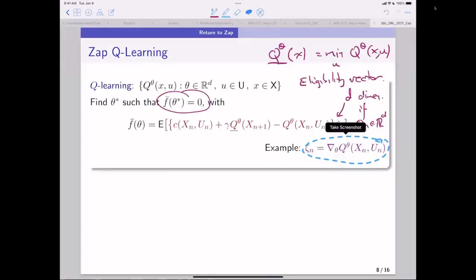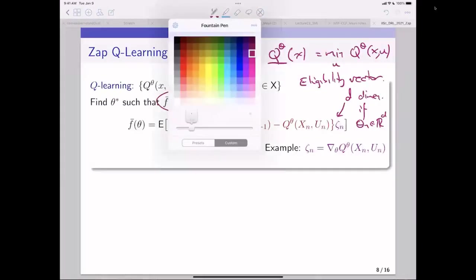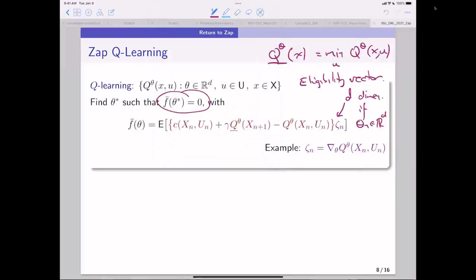So the main point is that by setting this equal to zero, we have D unknowns, because theta star is in R^D, and we have D constraints. And this is called the eligibility vector in reinforcement learning. So you can see people say, oh yeah, of course you want the gradient, because we want to go in the direction that Q is increasing or decreasing, whether we're trying to maximize or minimize. But that argument doesn't make sense because this is not positive or negative. It could be positive. It could be negative. So it's not a descent algorithm, no matter what anybody tells you.